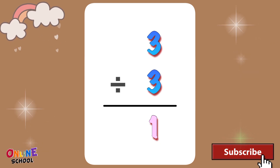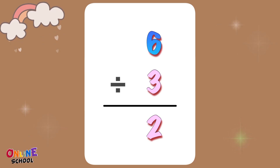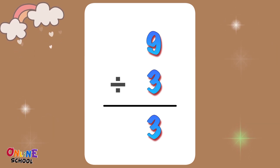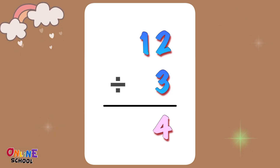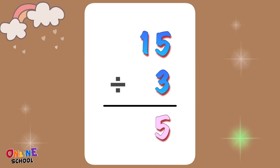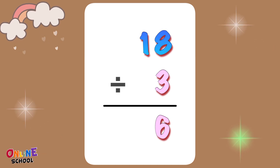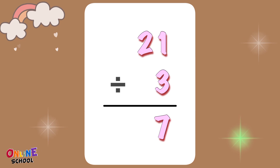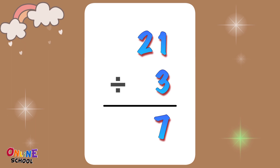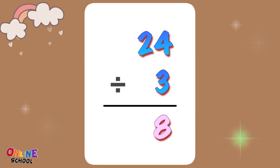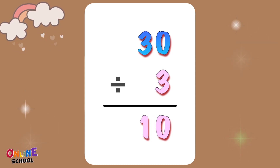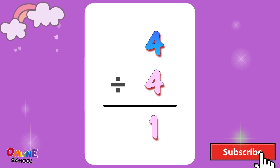Divided by 3. 3 divided by 3 equals 1. 6 divided by 3 equals 2. 9 divided by 3 equals 3. 12 divided by 3 equals 4. 15 divided by 3 equals 5. 18 divided by 3 equals 6. 21 divided by 3 equals 7. 24 divided by 3 equals 8. 27 divided by 3 equals 9. 30 divided by 3 equals 10.